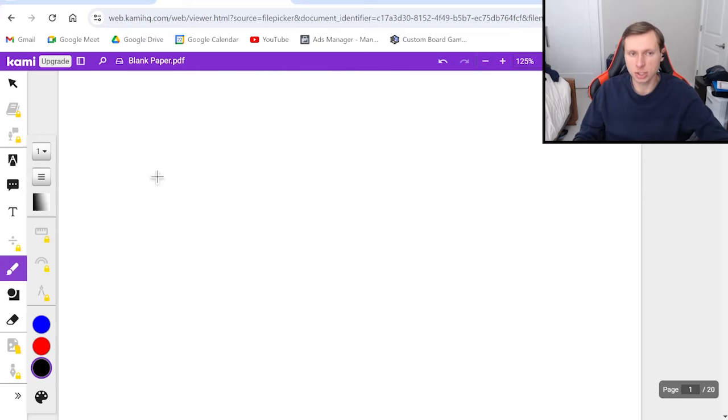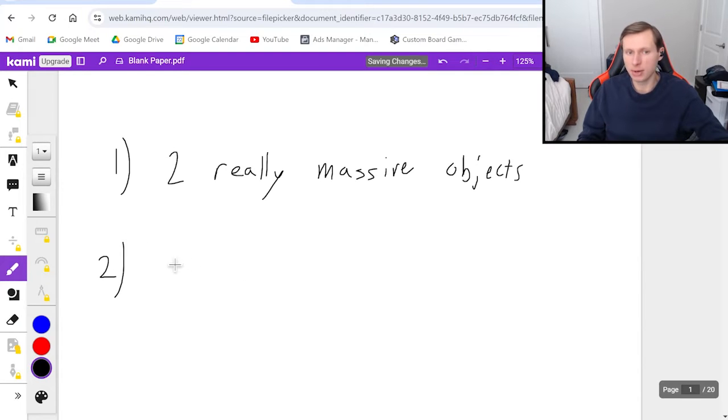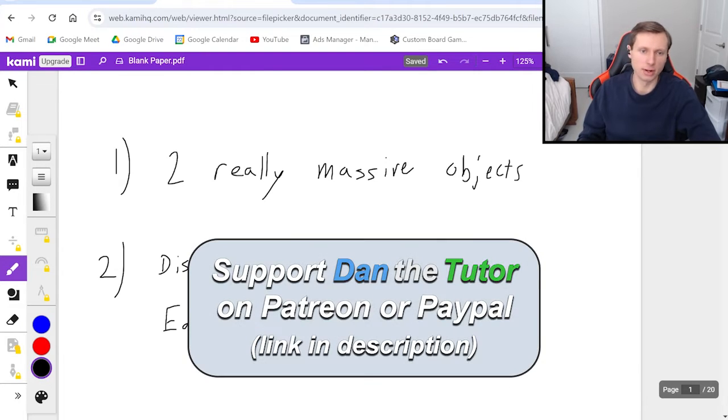But when do we use this complex formal equation? There's two times you use it. One, when we're talking about two really massive objects such as planets, stars, asteroids, etc. And the second time you use that equation is when we're talking about a distance really far from Earth. And that's subjective of course, like what does it mean to be really far? But we'll talk about it in the examples we look at today.